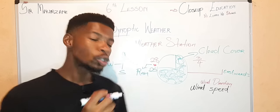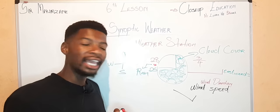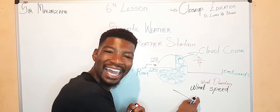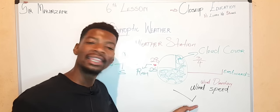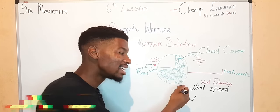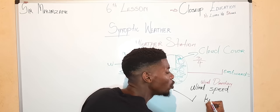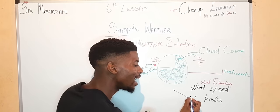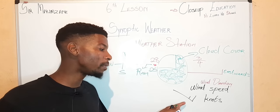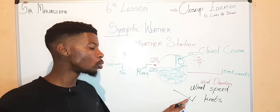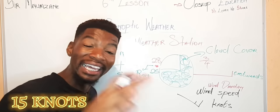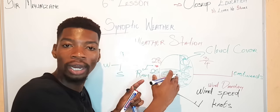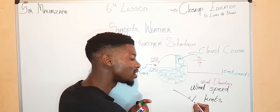So this is how a wind speed looks like. If there is a line at the end of the wind direction line, that means this is 10 knots. This is 10 knots. This is how you write your knots. But if we have another small line here, this will represent 5. So this will mean this is now 15 knots. The speed, the wind speed of that particular area.